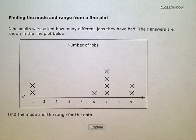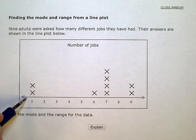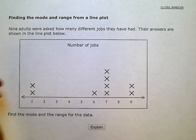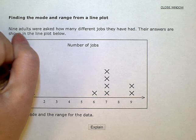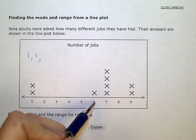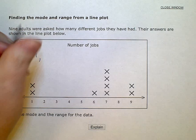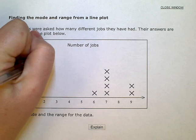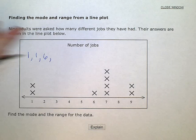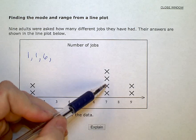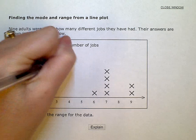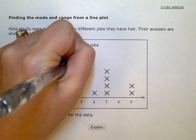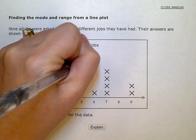So, if I was going to actually make a list of this data set, I would have one, one, one, six, one, two, three, four sevens, and two nines.